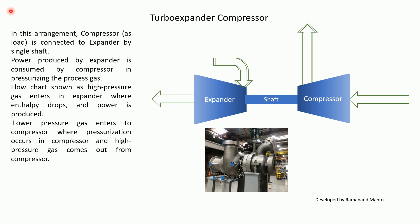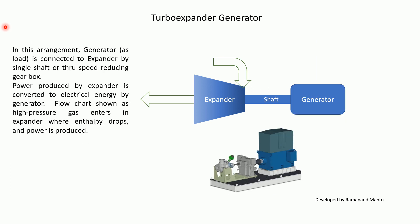In the Turbo Expander-Compressor arrangement, a compressor as load is connected to the expander by a single shaft. Power produced by the Turbo Expander is consumed by the compressor in pressurizing the process gas. High pressure gas enters the expander where enthalpy drops and power is produced; low pressure gas enters the compressor where pressurization occurs and high pressure gas comes out.